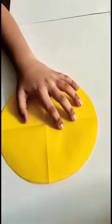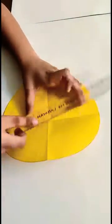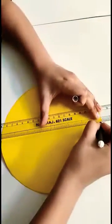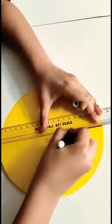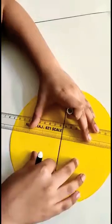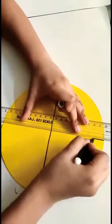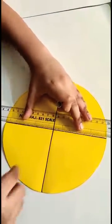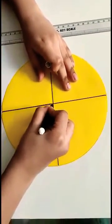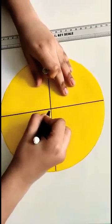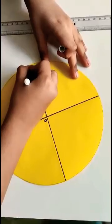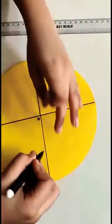We are going to mark this. For this, we are going to keep an O here for the center of the circle. A. This is the radius of the circle.